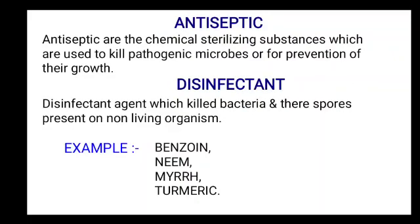Firstly, we discuss the definition of antiseptic and disinfectant with examples. Antiseptics are the chemical sterilizing substances which are used to kill pathogenic microbes or for prevention of their growth. Disinfectant: an agent which kills bacteria and their spores present on non-living organisms. Four examples are: first benzoin, second neem, third myrrh, fourth turmeric.